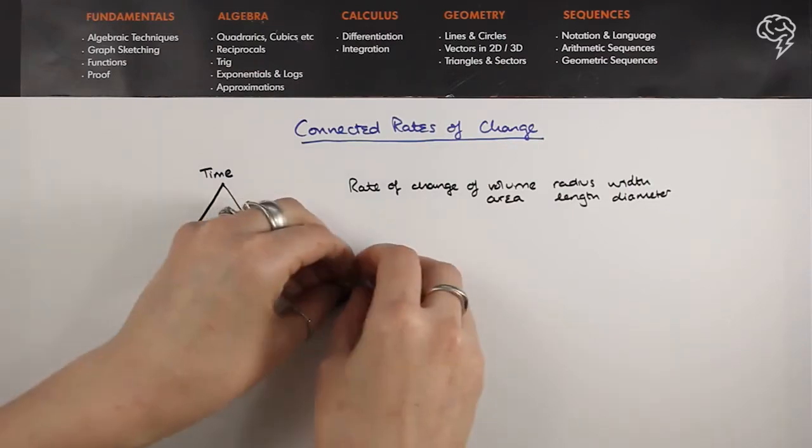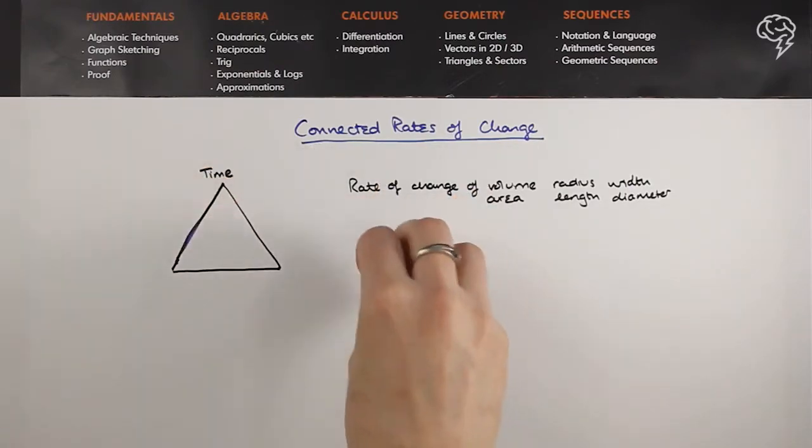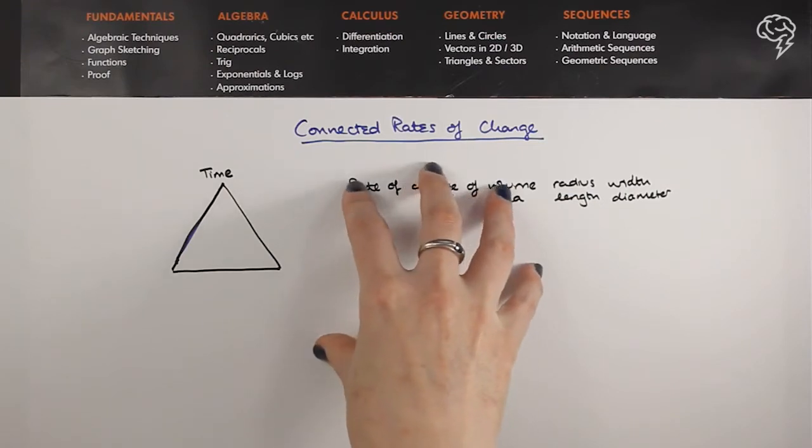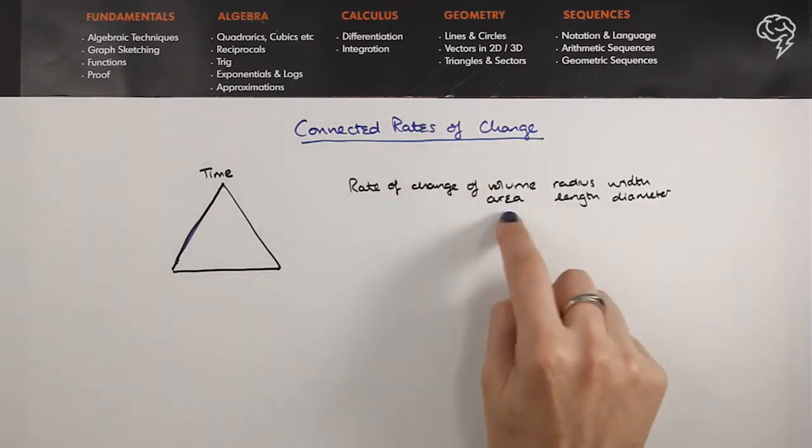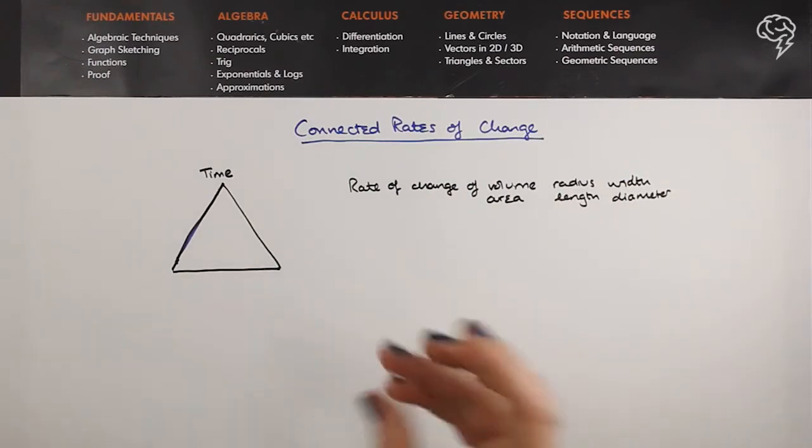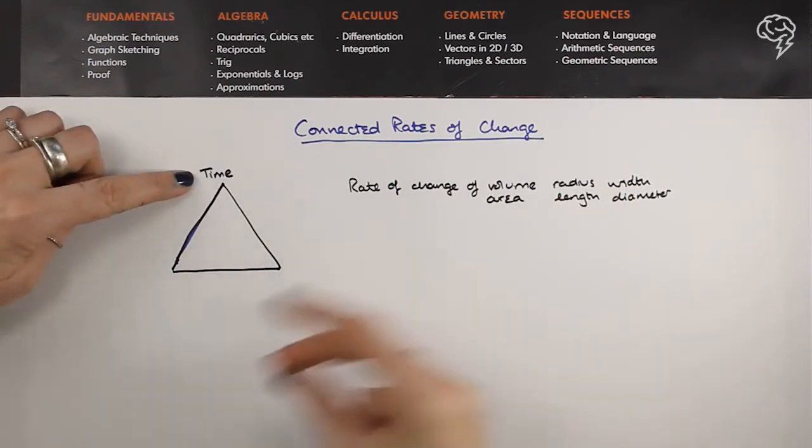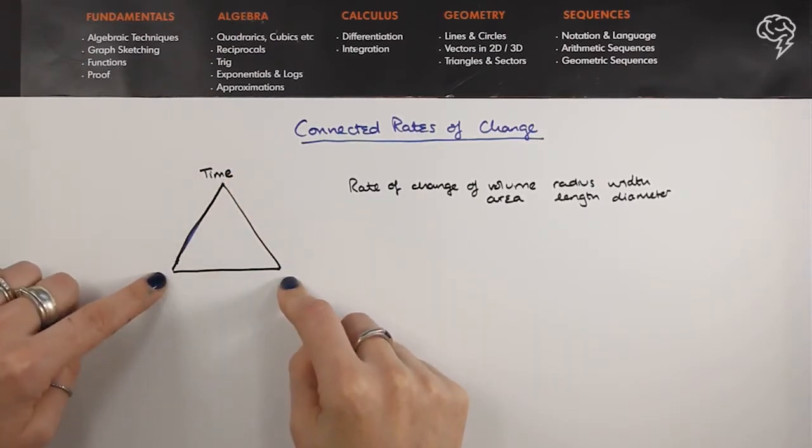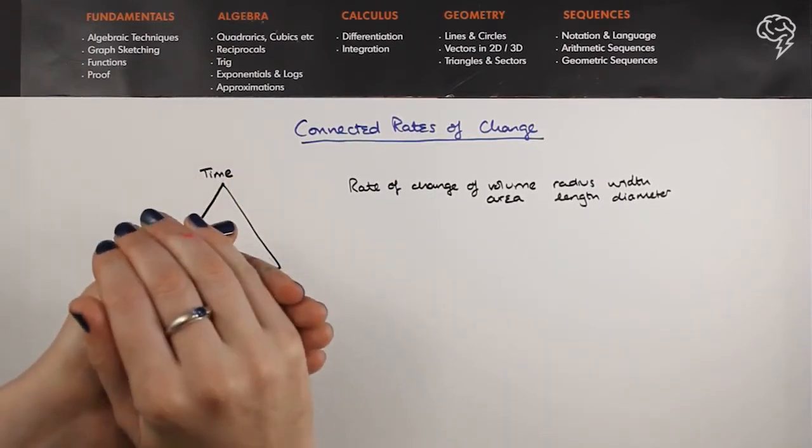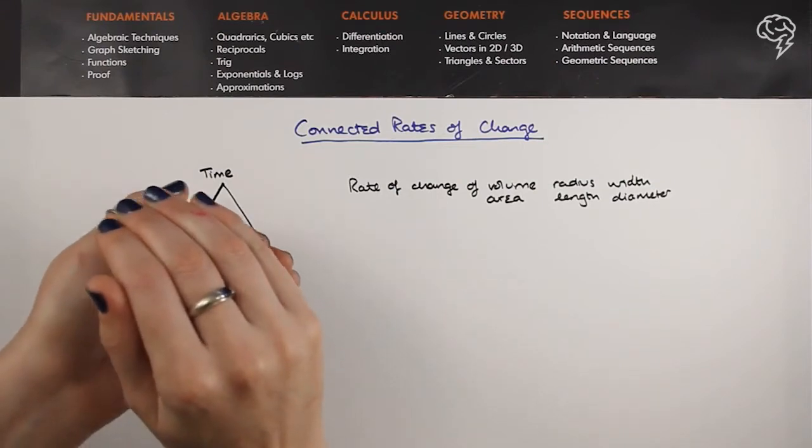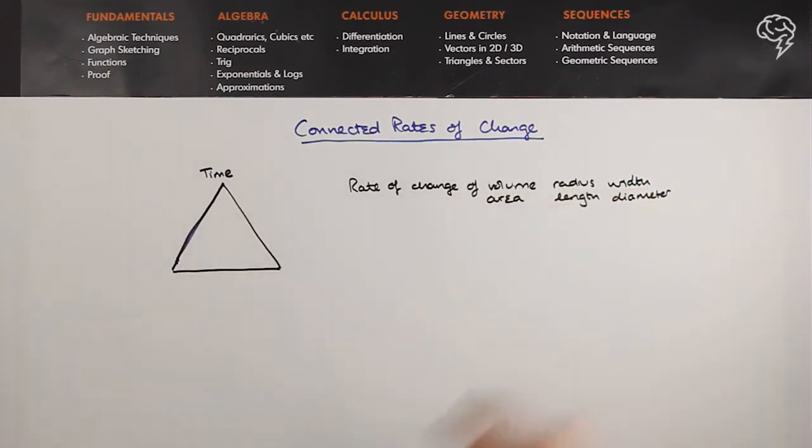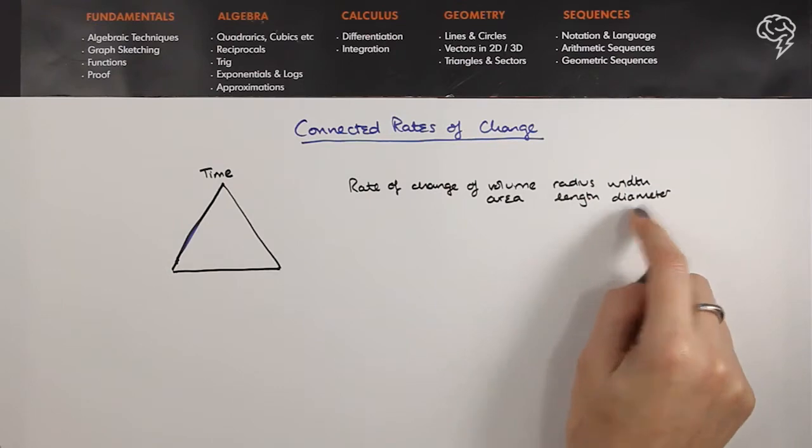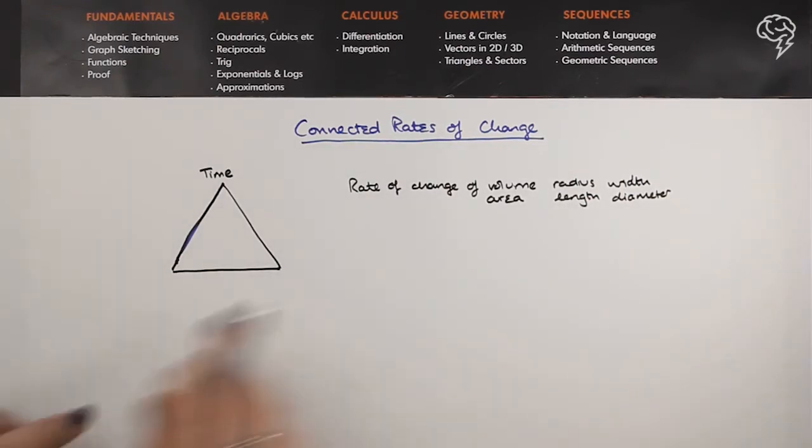So for example, we have something spreading out, so like an ink blot that spreads out, and as time goes on it gets bigger and bigger, so its area is getting bigger and its radius is getting bigger, for example. So you've got time ticking along, time at the top like this, and as this is ticking along, these two things are both changing. With a balloon blowing up, the time is clicking through and the volume is getting bigger and the radius is getting bigger, or you could call it diameter, whatever it is.